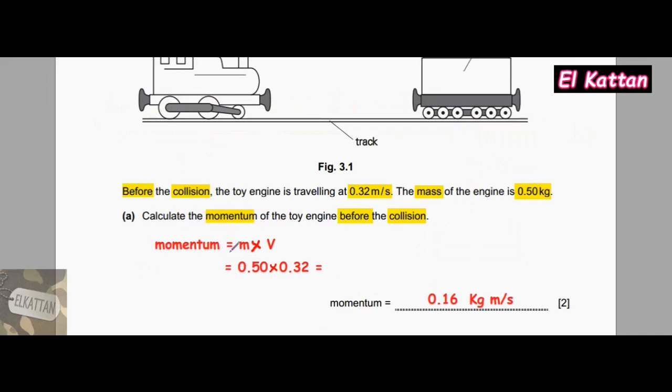Momentum equals mass times velocity, so the mass is 0.50 times the velocity which is 0.32, and the momentum is 0.16 in the unit kilogram meter per second. To check your answer, there is one mark for the substitution and one mark for the correct answer with the correct unit.